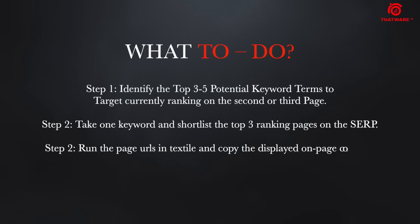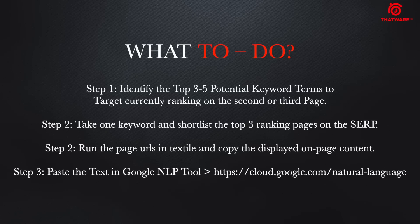The exact steps are: Step one — identify any potential keywords, around three to five keywords which are ranking on the second or third page. You definitely don't want to target keywords on the first page, and also not on the last page, because that would be quite difficult to achieve rankings in a shorter timeframe. Take any one keyword from the shortlisted set, run the page in a text extractor, and copy the displayed on-page content. Then paste the text into the Google NLP tool.